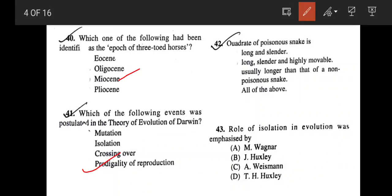Next question: Quadrate of poisonous snake is long and slender? Yes. Long and slender and highly movable? Yes. Usually longer than that of a non-poisonous snake? Yes. Or all of the above? The correct answer would be all of the above. Next: Role of isolation in evolution was emphasized by M. Wagner, option A.